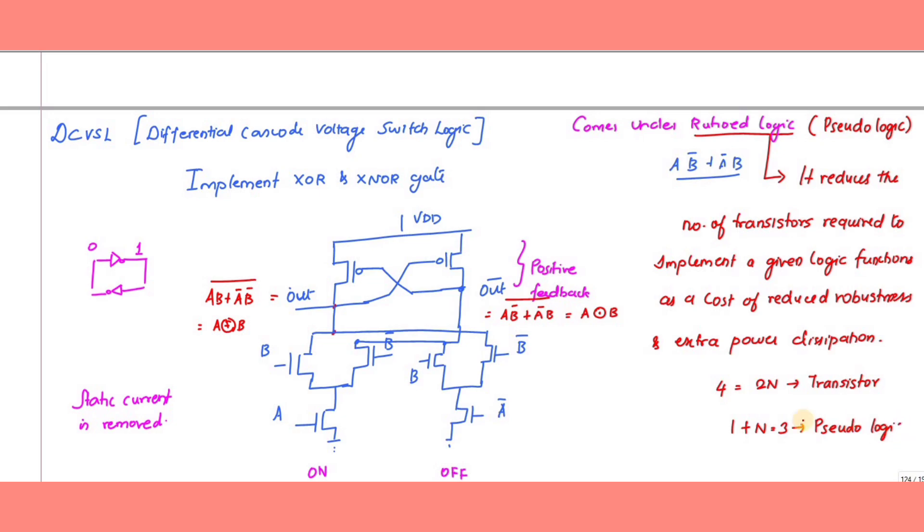This reduces the number of transistors but increases power dissipation. It also employs positive feedback. Consider two inverters connected together: if I give zero, the output is one. If I give one as input, the output is zero. This positive feedback is implemented at the PMOS side. If one output is zero, it turns on the corresponding transistor, connecting VDD to the output.